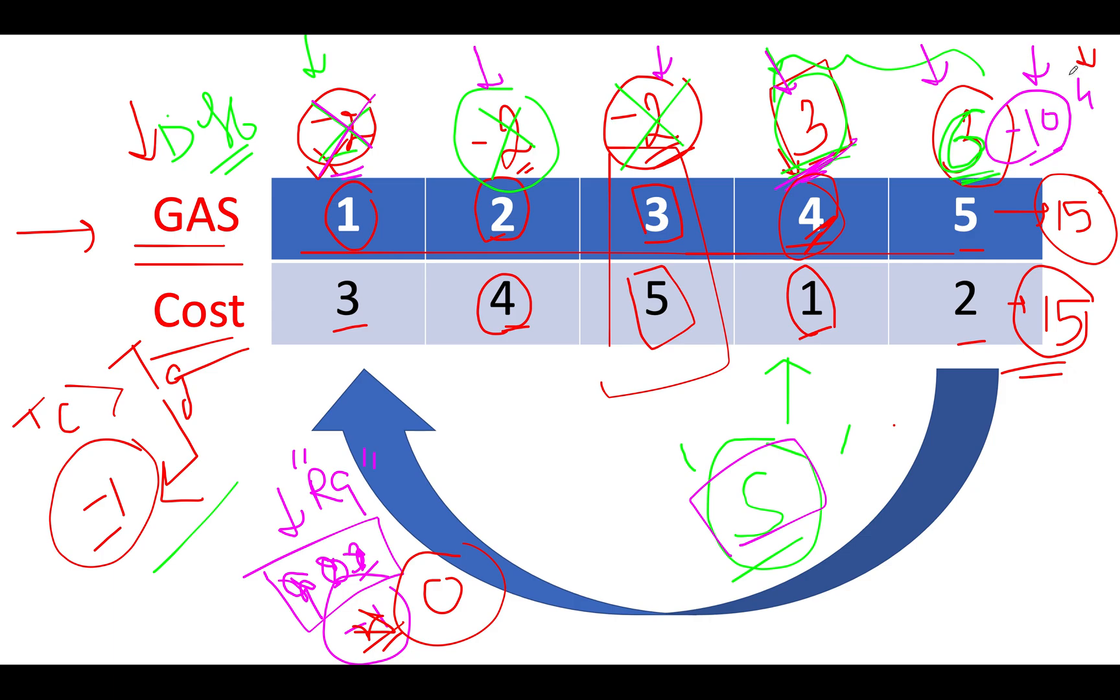Now we check what is the current value at this particular index. The current value happens to be greater than zero. So we update our starting pointer to this particular index, which will be six plus five plus six plus seven. So seven turns out to be your answer, which is expected. I hope you got the context and let's quickly walk through the coding section where I'll tell you how to code this up.